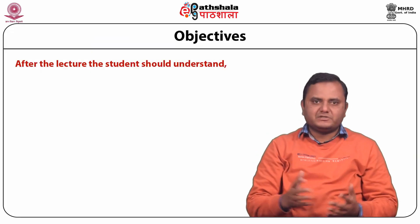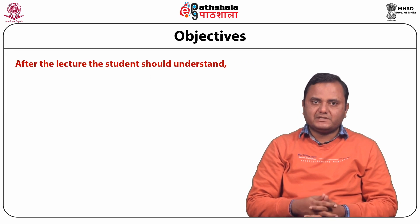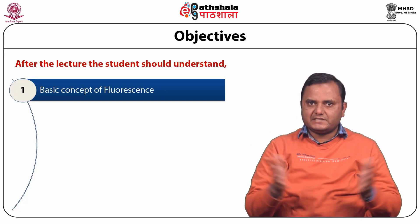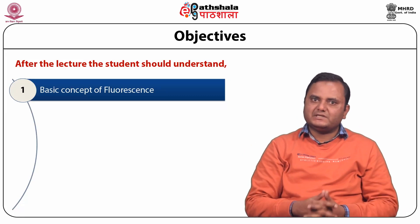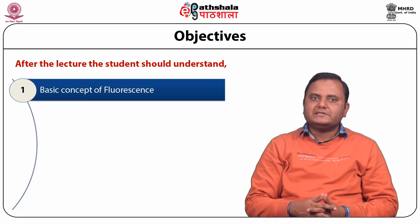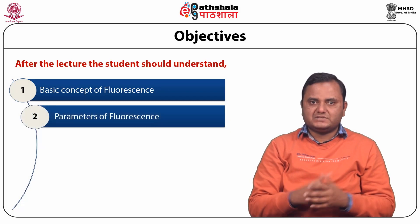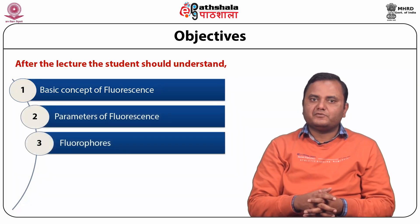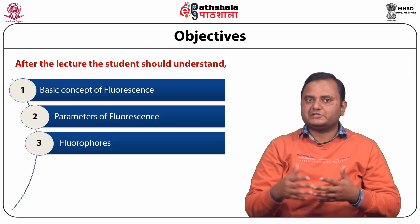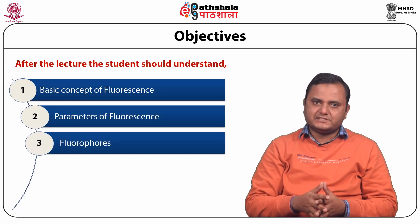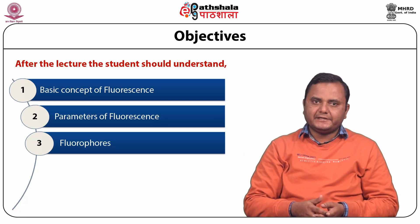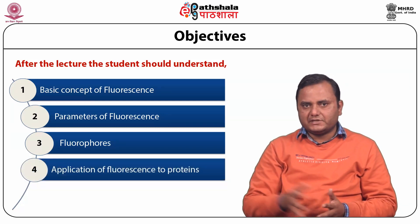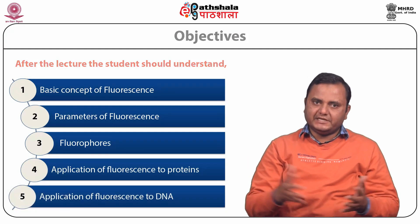After studying this module, the student will be able to understand the basic concept of fluorescence, its applications, the different parameters used in fluorescence, the different kinds of fluorescence especially used for detection of biological systems with respect to protein and DNA, and the application of fluorescence for protein and DNA.